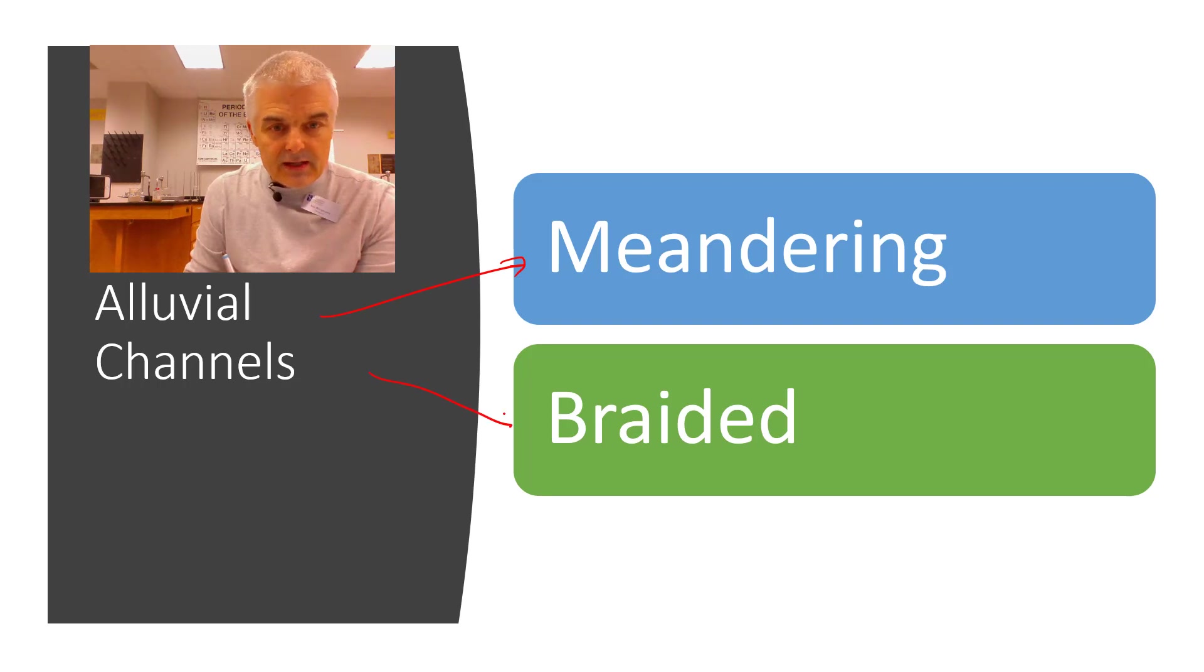There's a meandering and a braided. And the difference between meandering and braided has to do with the type of material that it's being transported, and then it changes the shape of it. Meandering tends to be small particles. So they tend to be clay and silt.